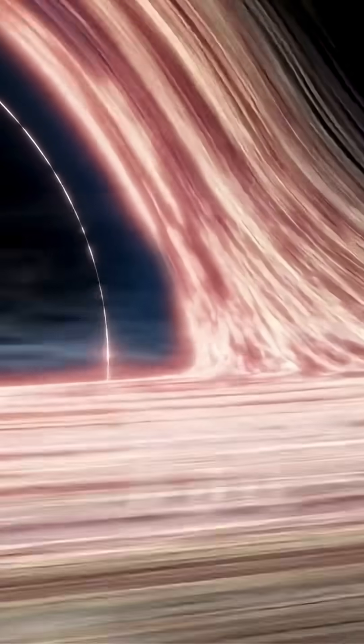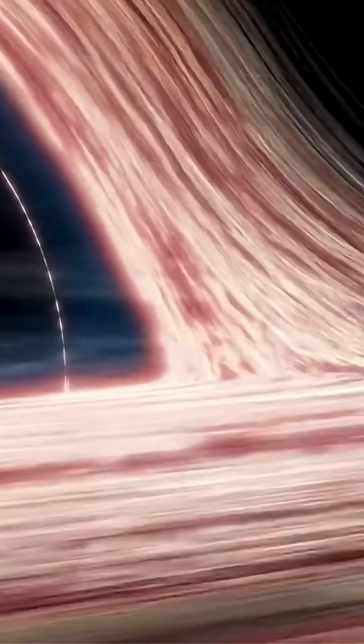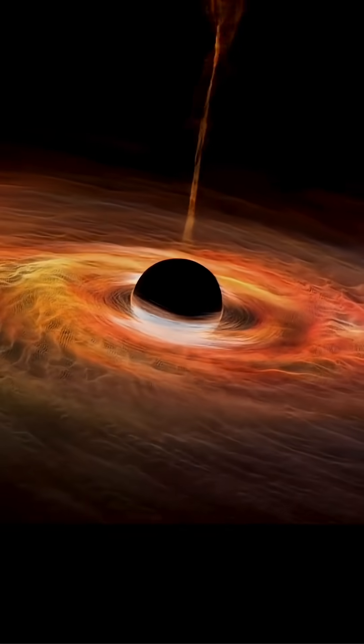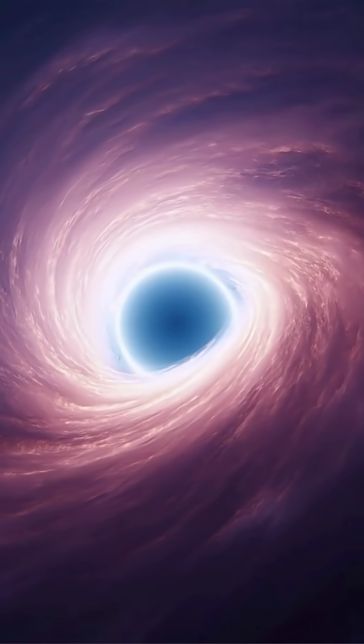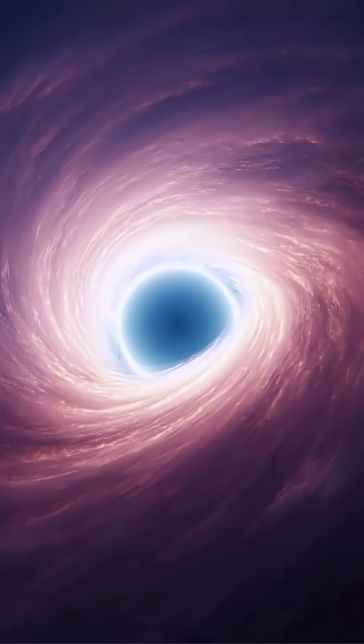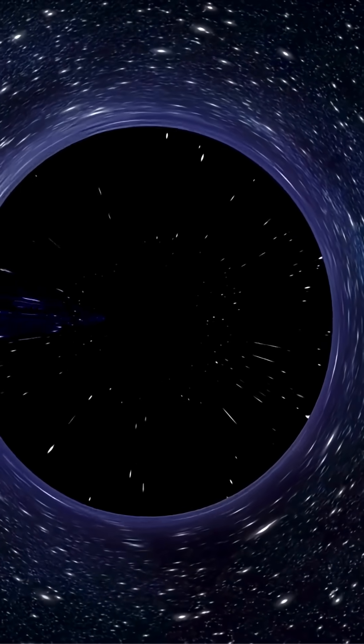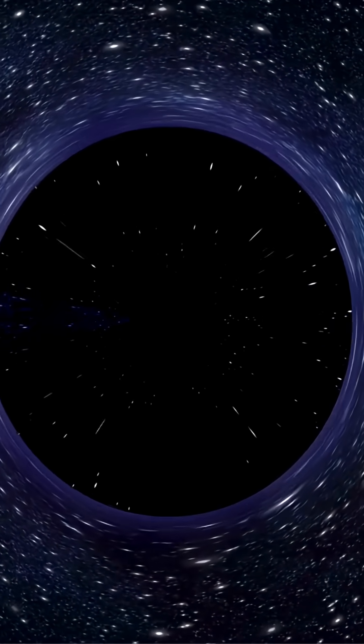The answer lies in the accretion disk, a glowing ring of matter spiraling into the black hole. As this gas heats up, it emits intense light and radiation. Even crazier? The extreme gravity bends that light into a glowing halo. So what we see is the shadow of the black hole, not the hole itself.